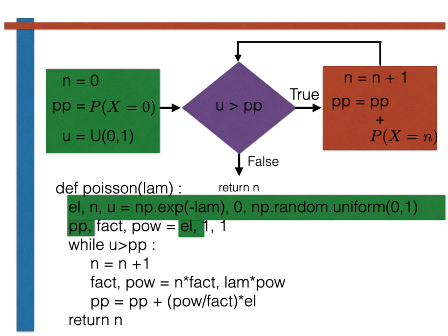The variable el is set equal to the negative exponent of lambda. Notice that lambda here is passed to the function as the input argument called lam. We evaluate e to the minus lambda outside the loop as this is quite an expensive calculation to do, so it is best if we don't do this every time we go through the loop. Notice that we also define two further variables, fact and pow, outside the loop.